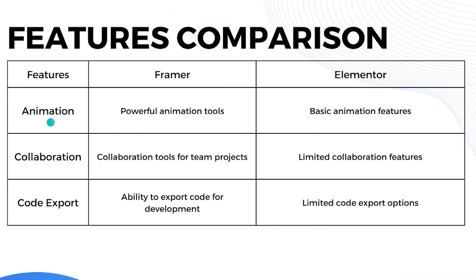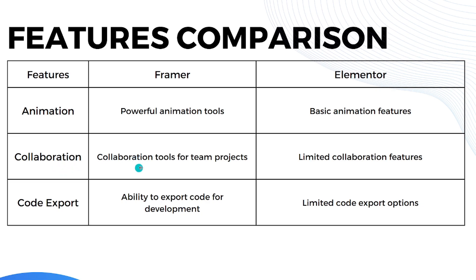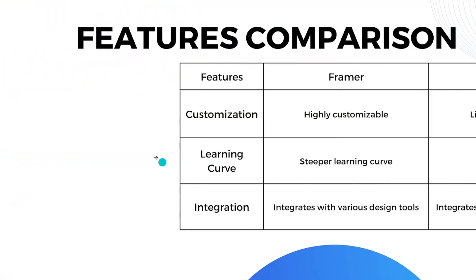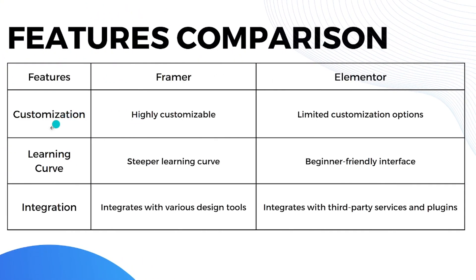When it comes to animation, Framer has powerful animation tools while Elementor has basic animation features. When it comes to collaboration, Framer has collaboration tools for team projects while Elementor has limited collaboration features. When it comes to code export, Framer has the ability to export code for development while Elementor has limited code export options.